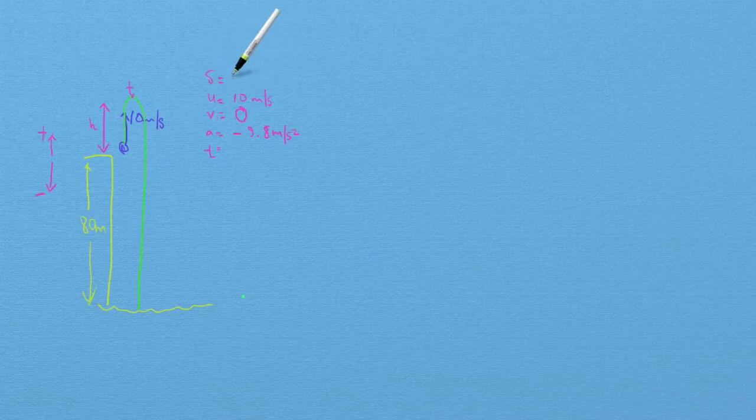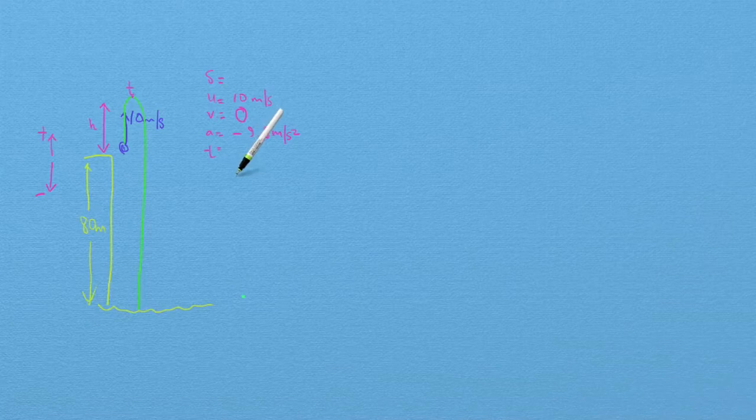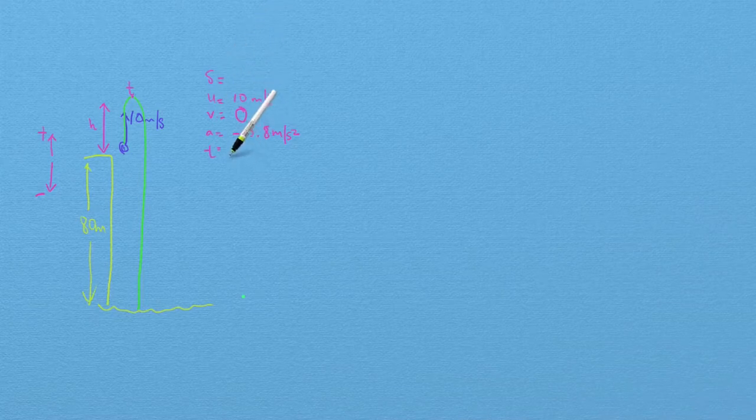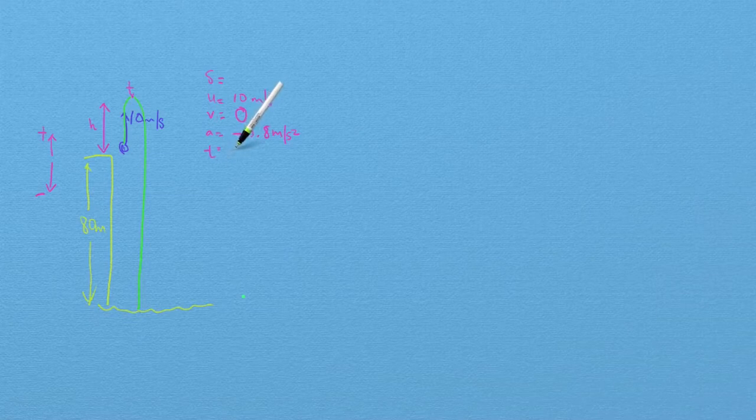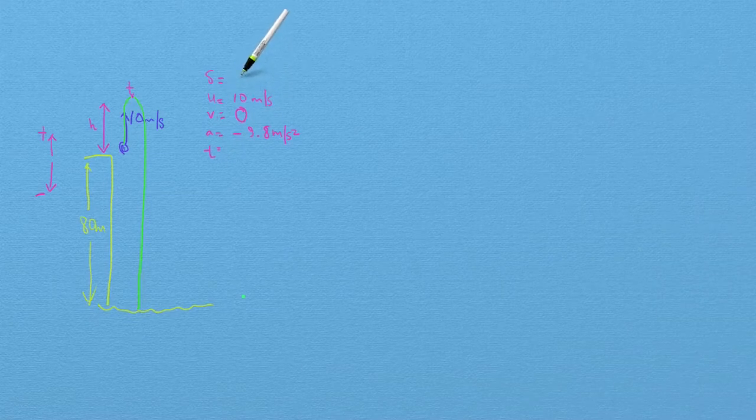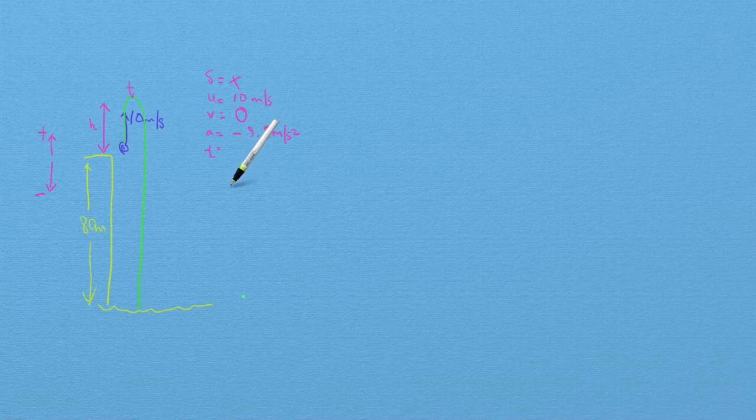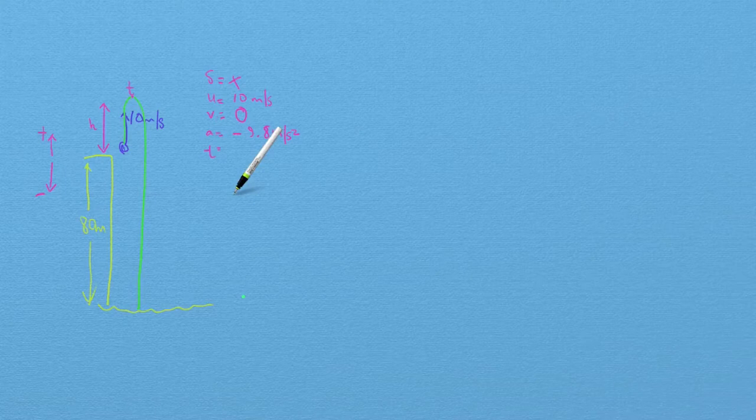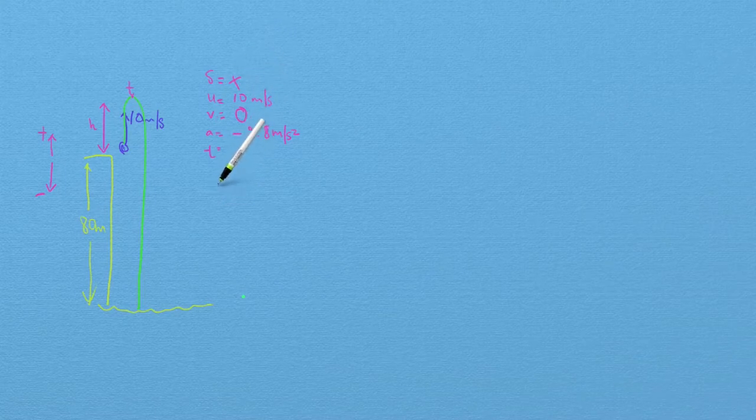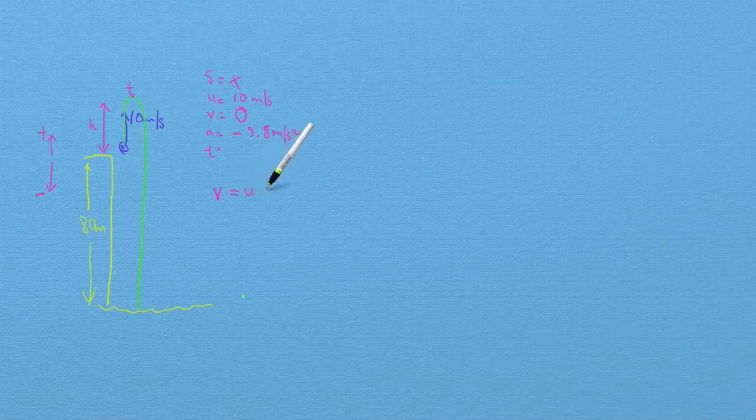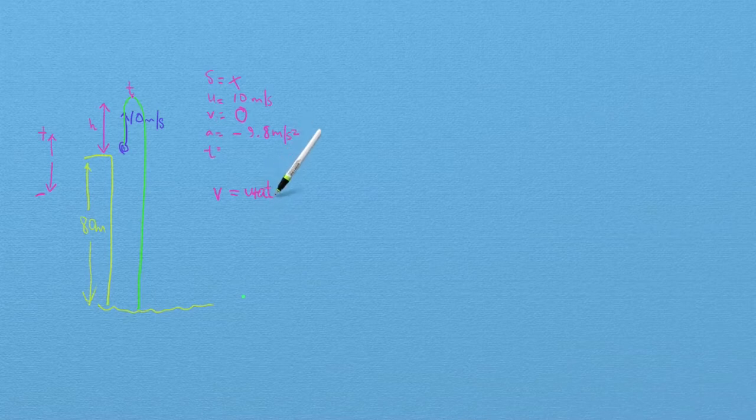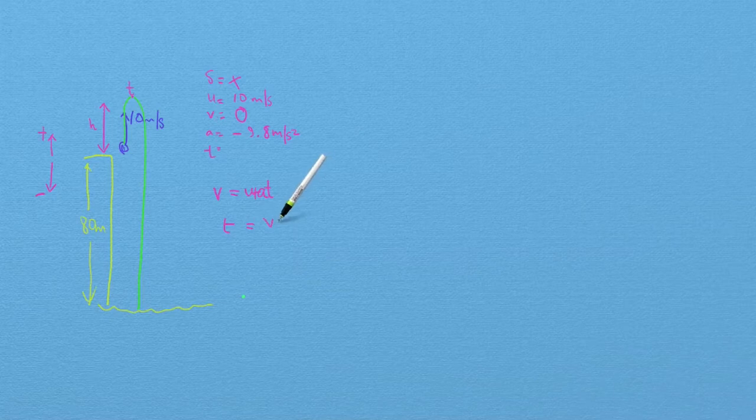So I wish to find both the displacement s and the time t. So let's just eliminate the displacement for now. And if we go back and look at the kinematical equations to find which one does not contain s, it would be v equals u plus at. That's the first equation. And from here I can find the time. So if I just rearrange this, you find that time is v minus u over a.